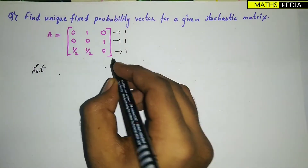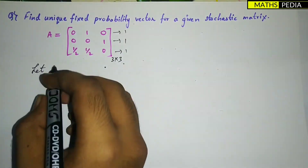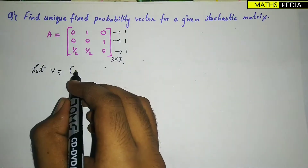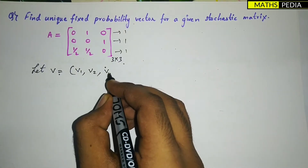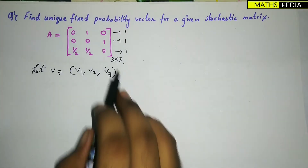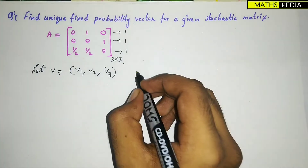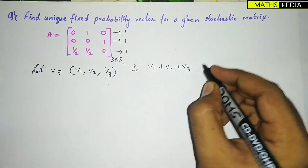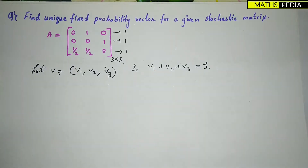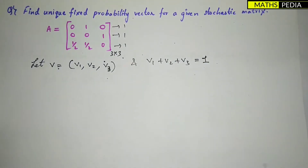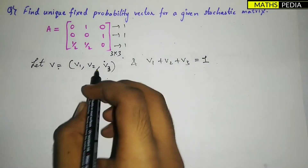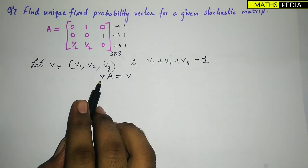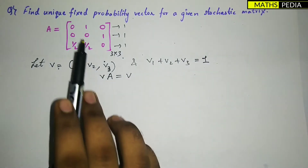We will consider a 3×3 matrix. Let v be the unique fixed probability vector, which is equal to (v1, v2, v3). Since it is 3×3, one more condition is that v1 + v2 + v3 = 1.